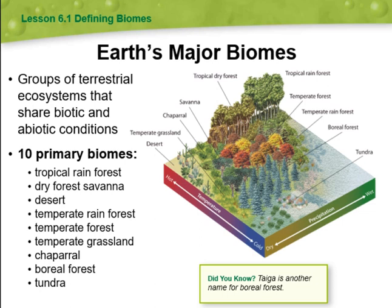We have 10 primary biomes: tropical rainforest, dry forest, savanna, desert, temperate rainforest, temperate forest, temperate grassland, chaparral, boreal forest, and the tundra.